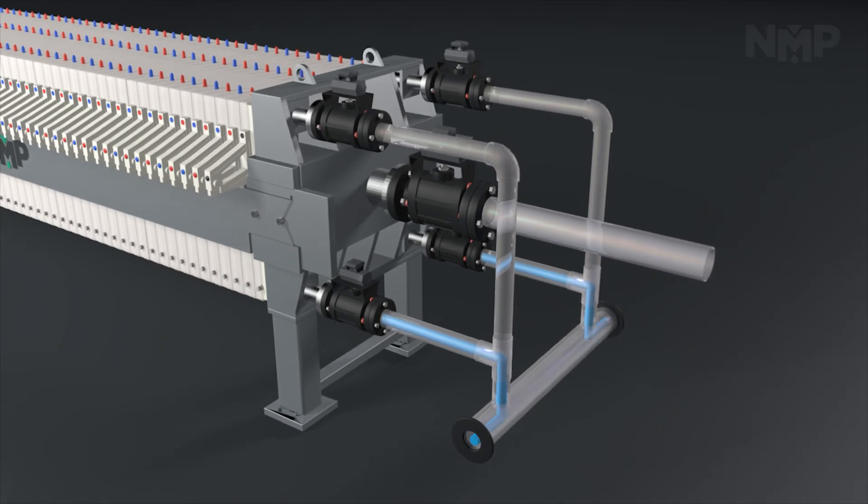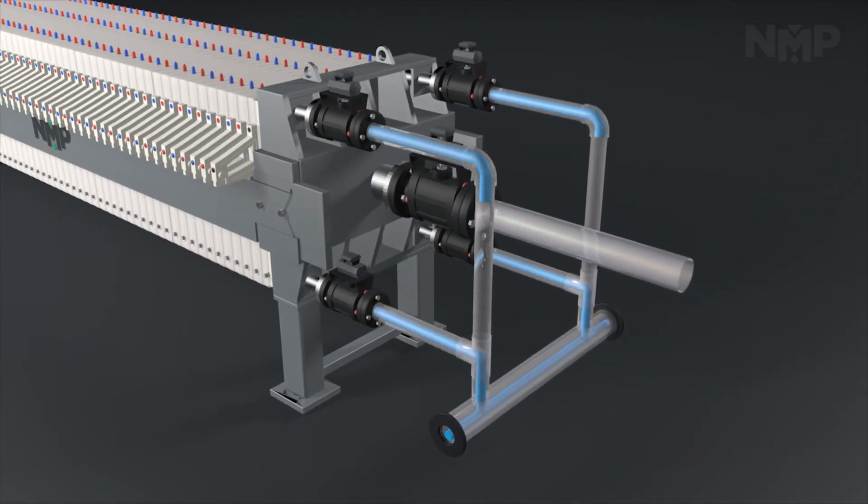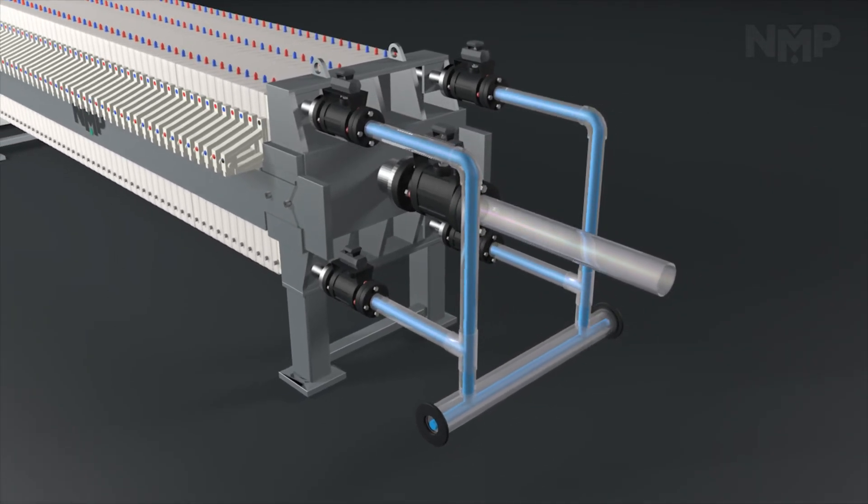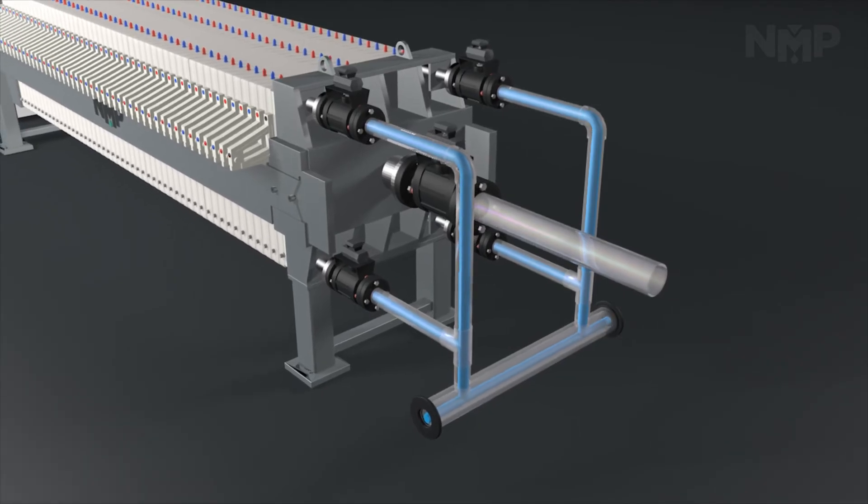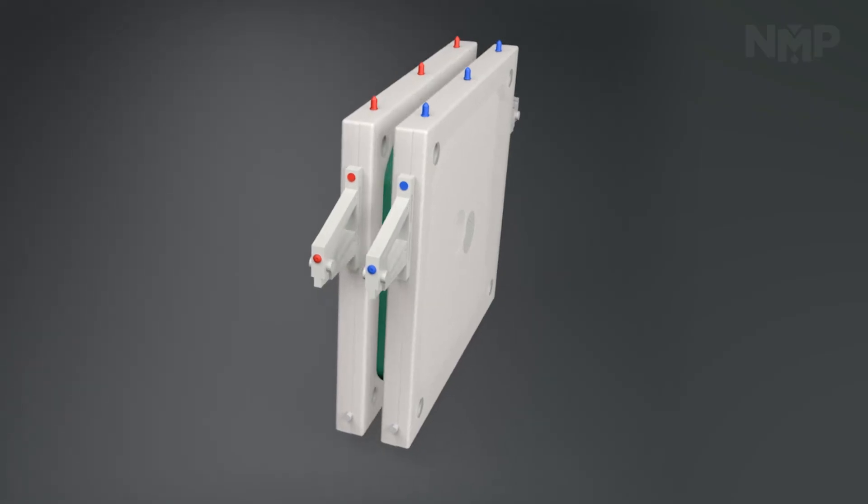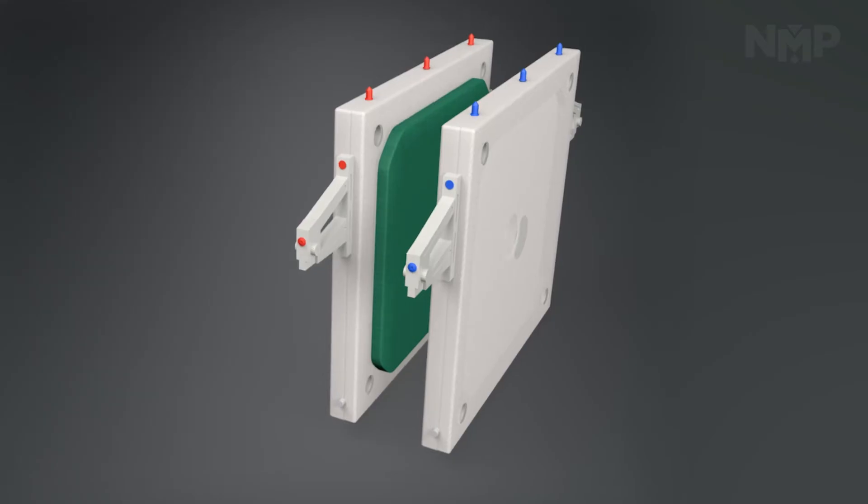Filtrate exits from the plates through the corner ports into the manifold. As the filter press feed pump builds pressure, the solids build within the chambers until they are completely full of filter cake.